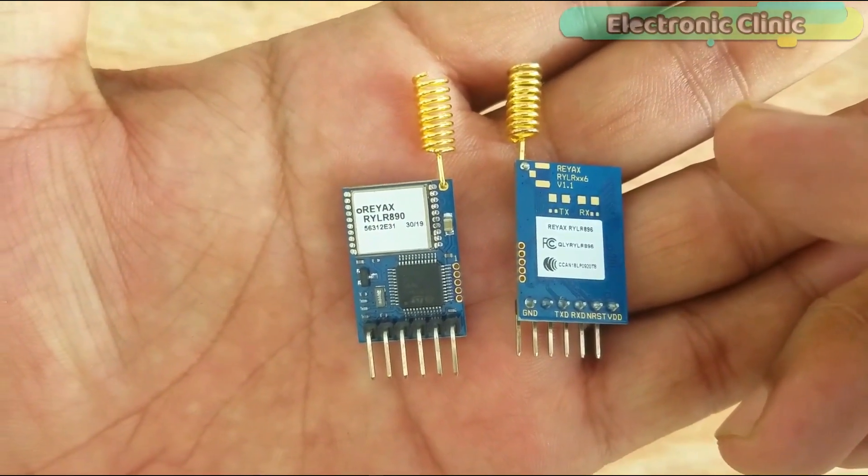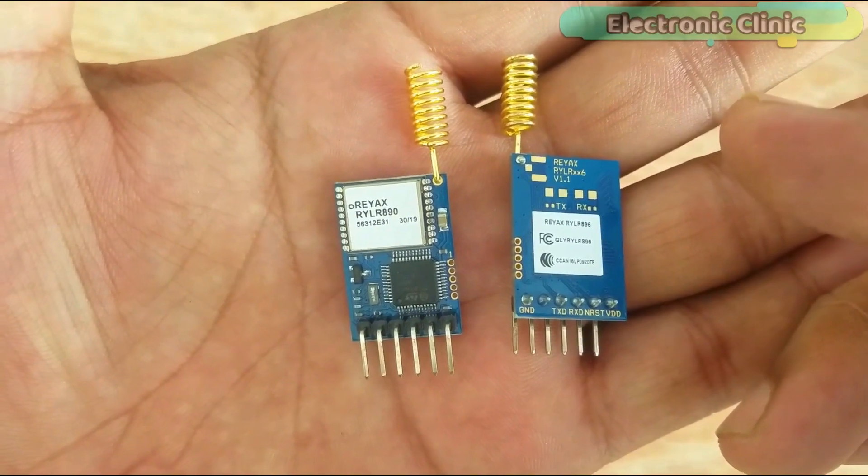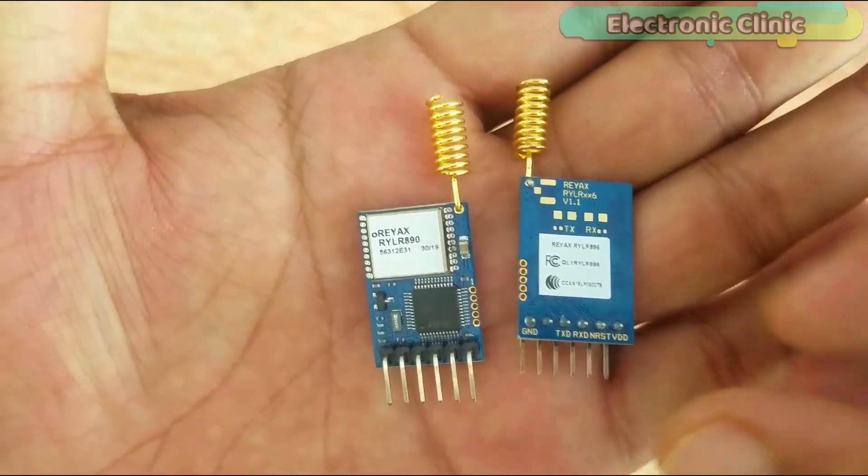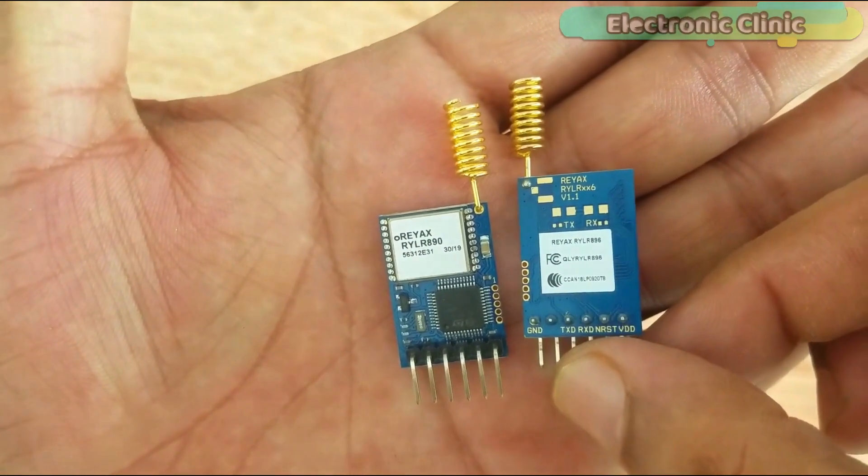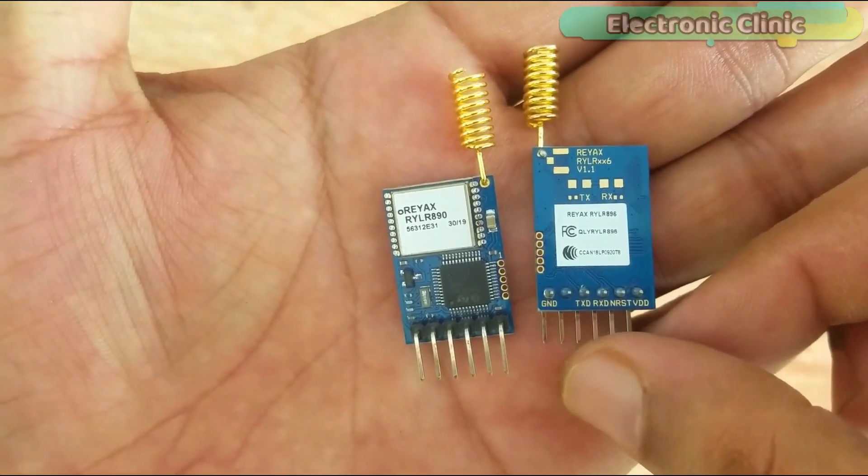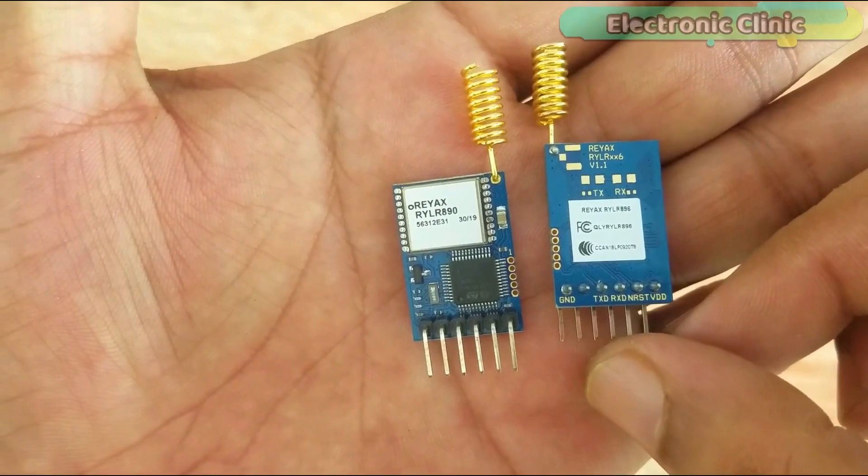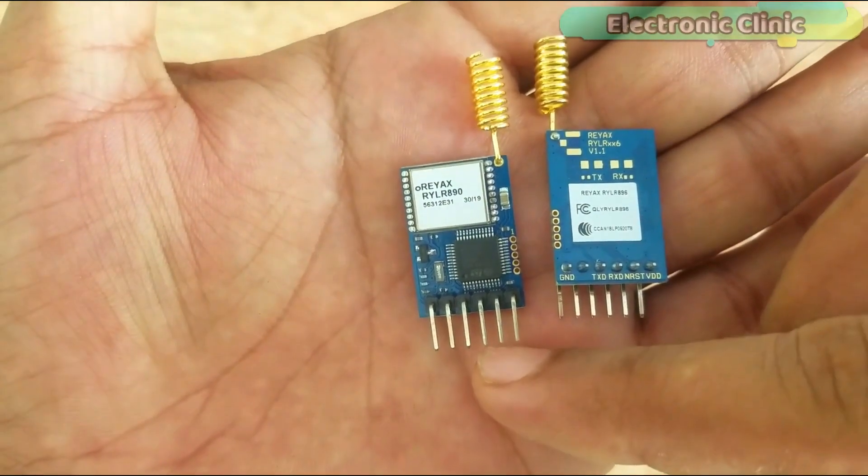LoRa transceiver modules can be used in IoT applications, mobile equipment, home security systems, industrial monitoring and control equipment, car alarm systems, robotics, sensor monitoring and so on.